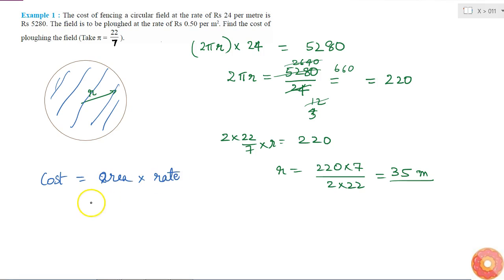So what is the area? Area of the circular field is simply πr² multiplied by what is the rate? The rate is given as rupees 0.5 per meter square. So this into 0.5 rupees per meter square. So if I want to calculate the value of πr², what is it?